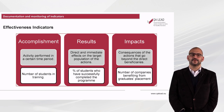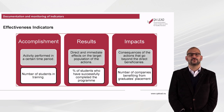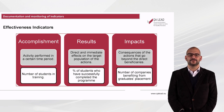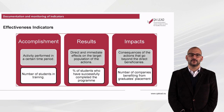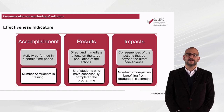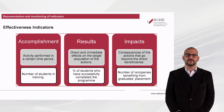Let's see some examples of effectiveness indicators. Of accomplishment, which means the activity performed in a certain time period — for example, the number of students in training. Of results, which implies direct and immediate effects on the target population of the actions — for example, the percentage of students who have successfully completed the program. Of impacts, meaning the consequences of actions that go beyond the direct beneficiaries — for example, the number of companies benefiting from graduates' placement.